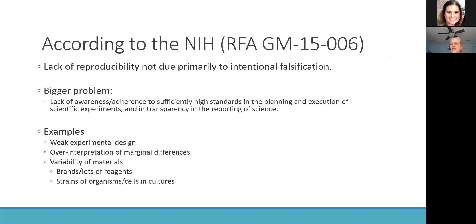They also found that there was often over-interpretation of marginal differences, which is an issue with rigor in your reporting — being very careful about what you're saying you observed and how good the evidence is. The third thing they noticed was variability in materials. We want to be careful about validating and verifying the materials we're using. Imagine brands for lots of reagents varying between labs, or things like strains of organisms and cells in culture — those can vary from lab to lab and cause lack of reproducibility.